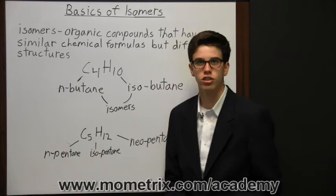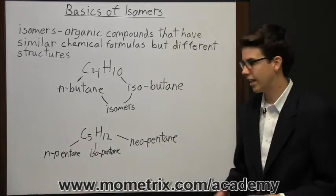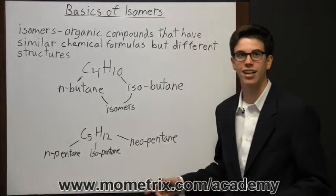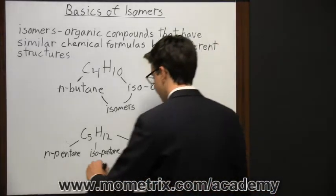So now we have three different structures here: n-pentane, isopentane, and neopentane. So these are all isomers of each other.